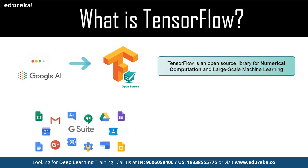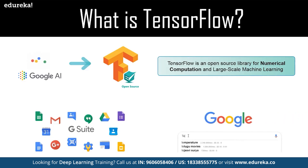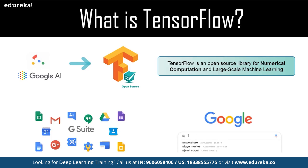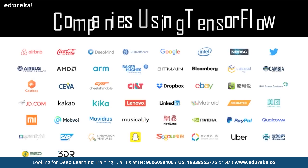TensorFlow bundles together a suite of machine learning and deep learning models and algorithms. Google uses machine learning in all of its products to improve the search engine, translation, image captioning, and recommendations. For example, Google users experience a faster and more refined search with artificial intelligence — if the user types a keyword in the search bar, Google provides a recommendation about what the next word could be.